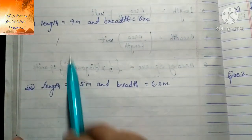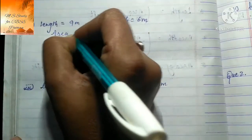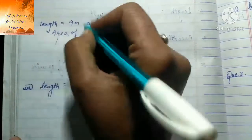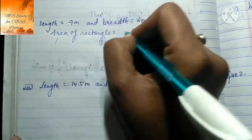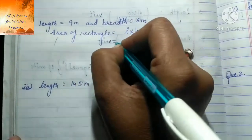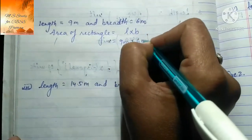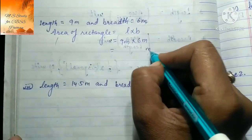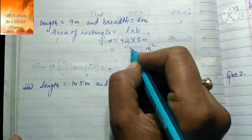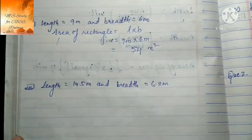Next part: length = 9 meter and breadth = 6 meter। Area of rectangle = length × breadth = 9 m × 6 m = 54 m²।